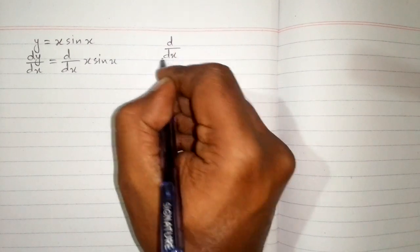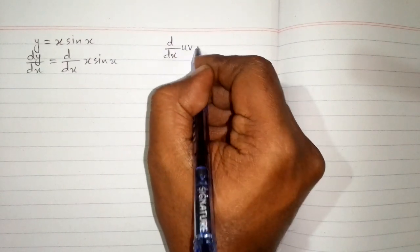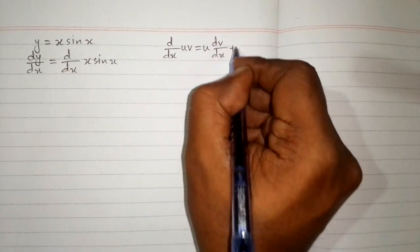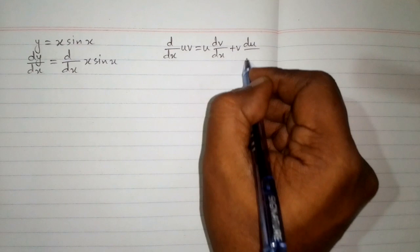The product rule is d/dx of uv equals u times derivative of v plus v times derivative of u.